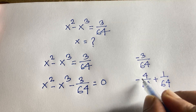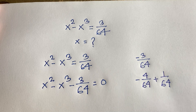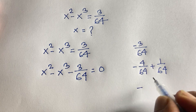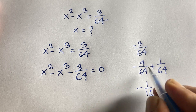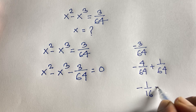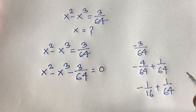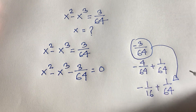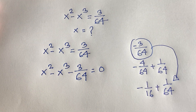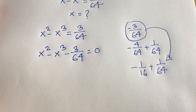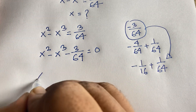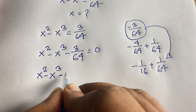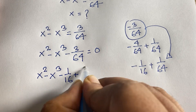With common denominator 64, minus 4 plus 1 gives minus 3. And minus 4 over 64 simplifies to minus 1 over 16, since 64 divided by 4 is 16. So minus 3 over 64 equals minus 1 over 16 plus 1 over 64. So we have x squared minus x cubed minus 1 over 16 plus 1 over 64.